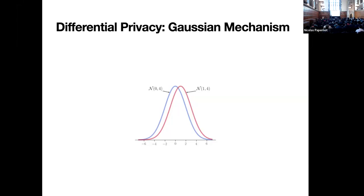Without differential privacy, if someone else asks another question and the true answer turns out to be one, differential privacy says I'm not going to tell you one — I'm going to draw a sample from a red distribution. Without differential privacy, by comparing the true answers zero and one, an attacker can tell whether you exist in the database or not, which violates your privacy.